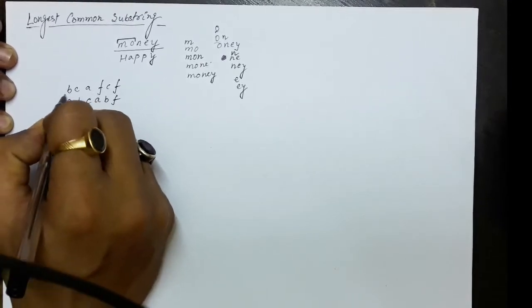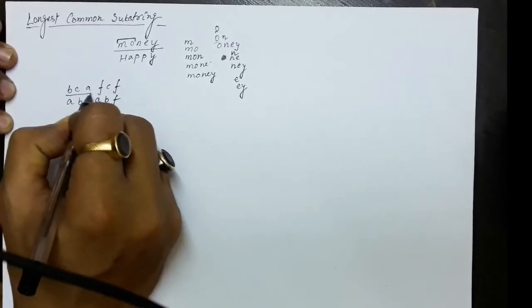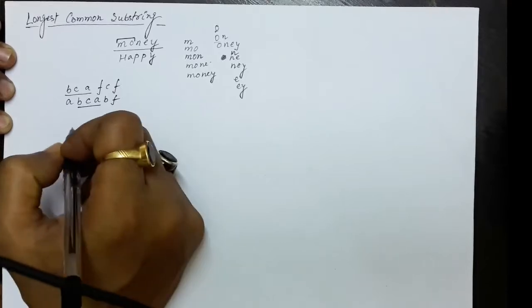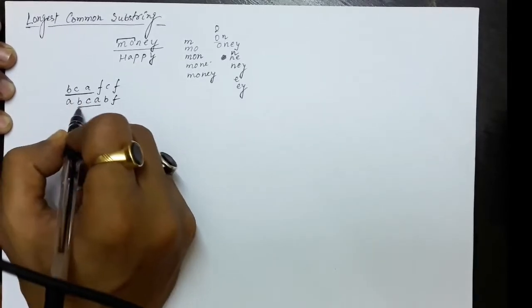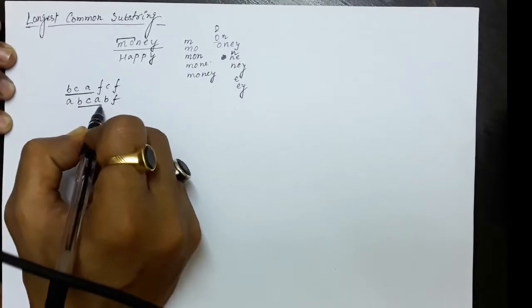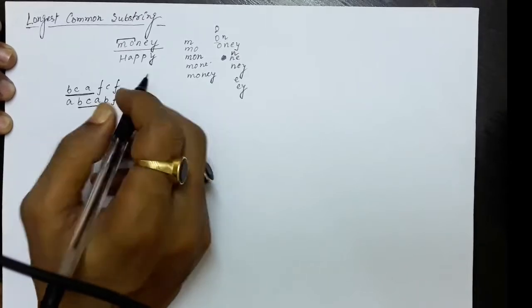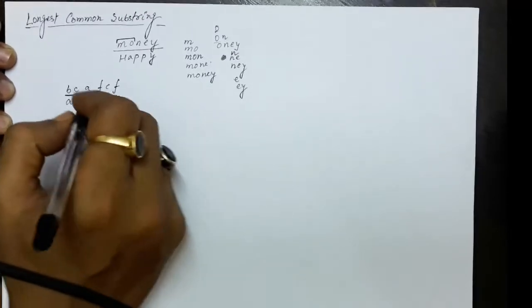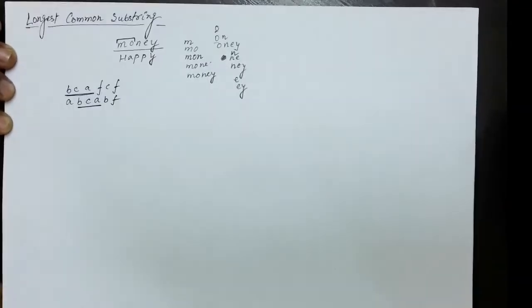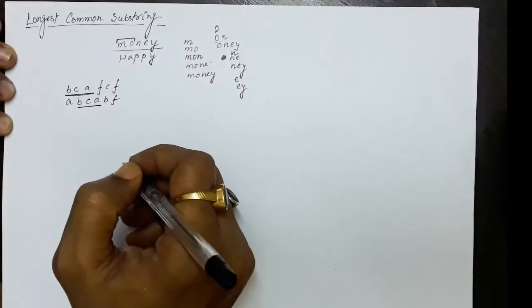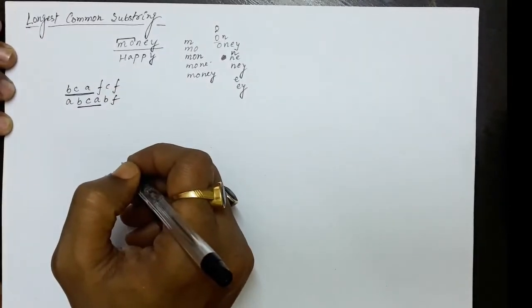There is B, C, A in the first string and B, C, A in the second string also. So in sequence, we have these two substrings in common. We have to find out what is the longest common substring from the given two strings. To find this, we will be employing a dynamic programming solution.